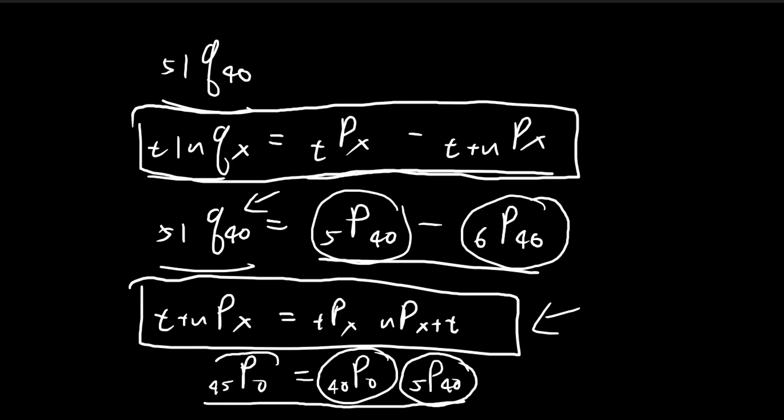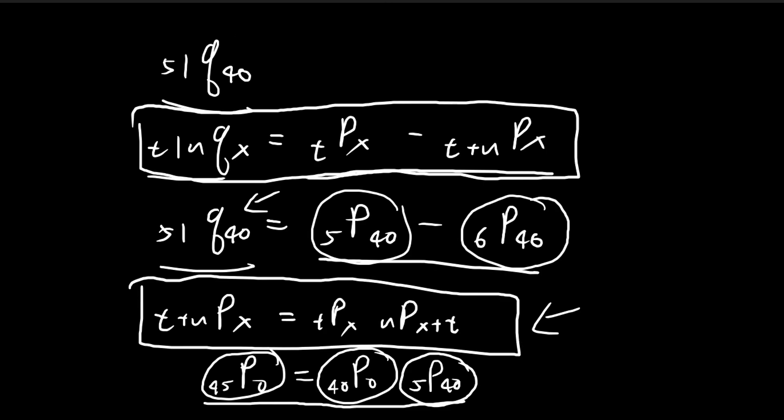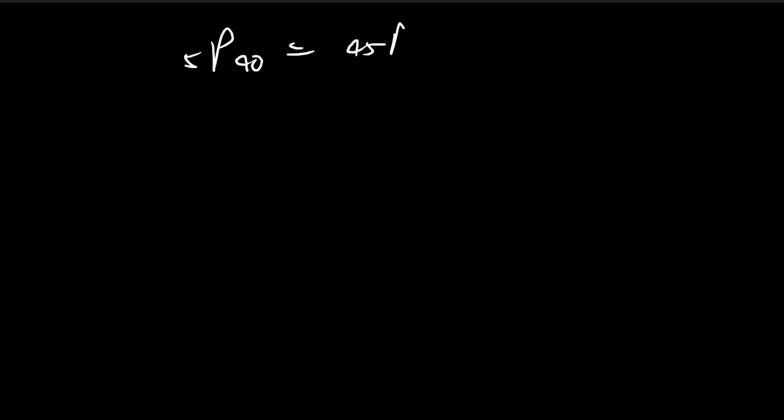This expression we need to find. These two expressions we already know because we have this function. So we can apply it directly to find 5p40, which is 45p0 divided by 40p0.